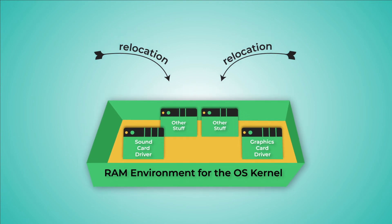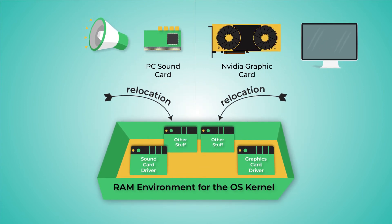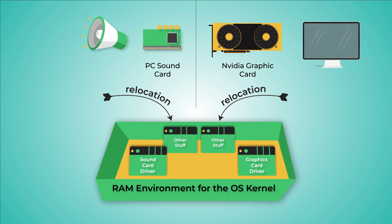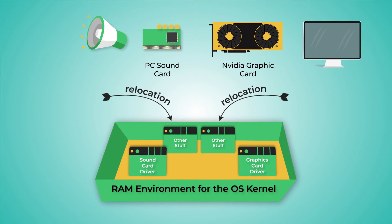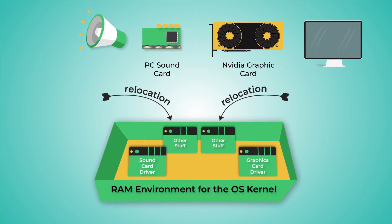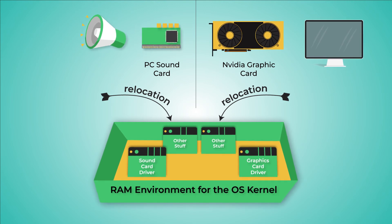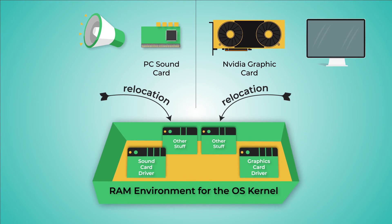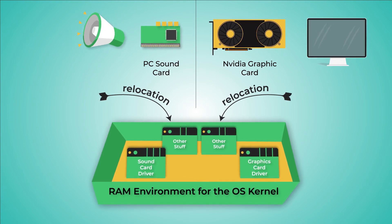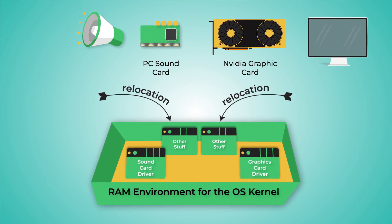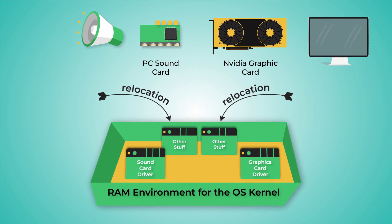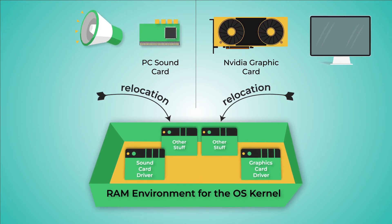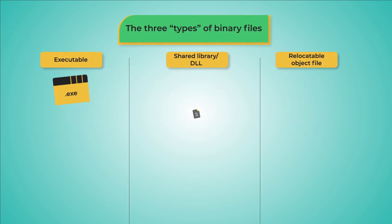Secondly, relocatable objects are used by operating system kernels to package device drivers. Since the OS itself is also a program — albeit a very low-level one — it also has a wildly variant RAM usage profile, just like a web browser or a game. Modern OSes try to load drivers for hardware only when they need them, dynamically relocating the driver and loading it into the operating system's RAM environment. Drivers are only used by the OS and don't need to be used by other running programs simultaneously the way shared libraries do. So since the OS is the only program that uses drivers, it can afford to use the faster relocation technique used by relocatable object files.